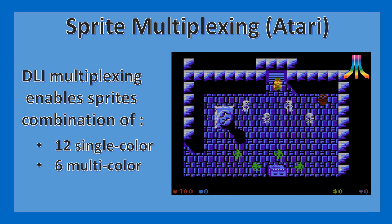The next important feature is sprite multiplexing on the Atari. Previously there was a limit of eight sprites — two sets of four sprites flickered between one set and the other every other frame, which didn't look good because they would appear half transparent against the background. There was a lot of information available on the internet on the topic of DLI multiplexing, where you set some interrupt lines whilst the screen is being displayed, and that allows you to reallocate the position and color of sprites.